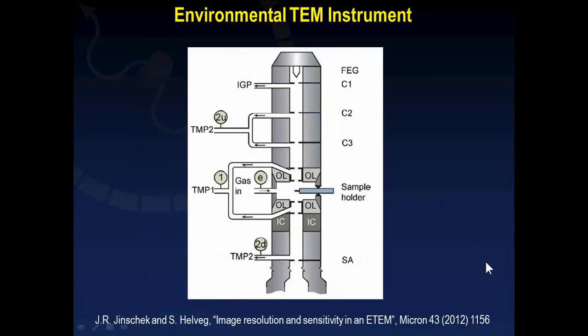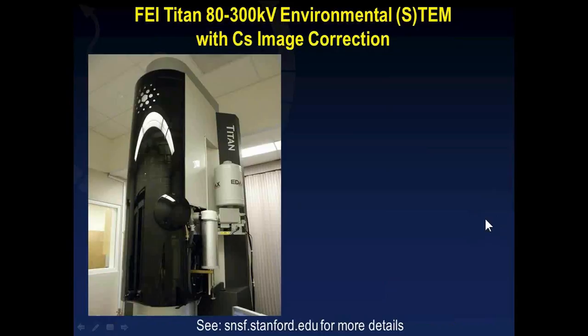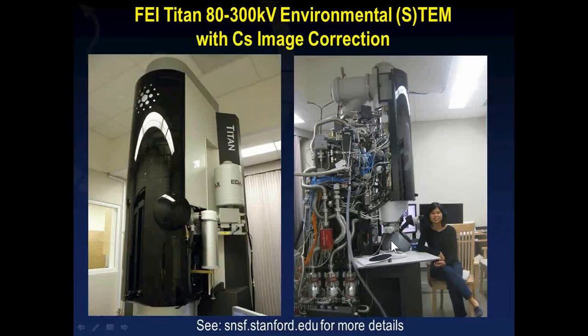The second approach involves a specialized environmental TEM instrument. In the ETEM, the objective pole pieces function as an environmental cell and gas is introduced within the objective lenses. Fixed apertures located inside the microscope column limit the volume of gas diffusing to other parts of the column such as the electron source. The gas is differentially pumped out of the column using a series of turbo-mechanical pumps. Our lab's ETEM has additional turbo pumps and lines which support the environmental mode of the instrument.